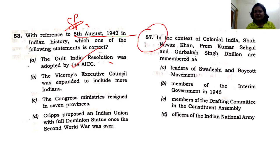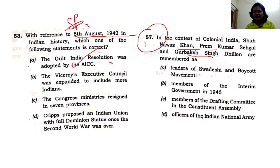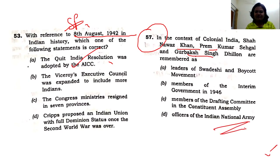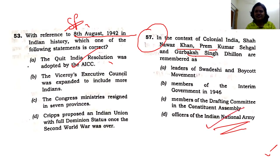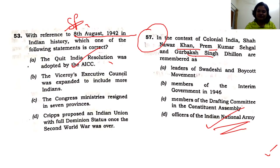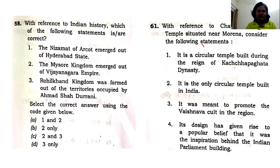The 57th question is about Dhillon, Shah Nawaz, and Gurbaksh Singh Dhillon. These INA officers were openly tried at the Red Fort and people came to fight for them. This is a very direct question — I don't think anyone would have wasted even two seconds marking the answer.